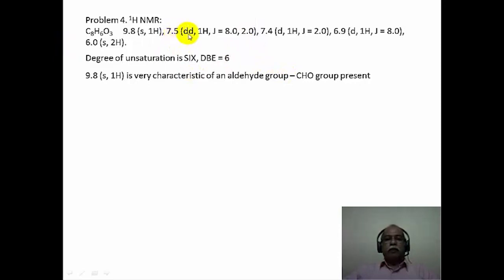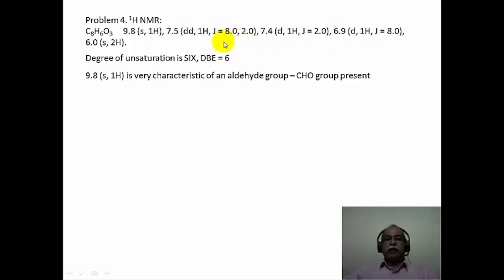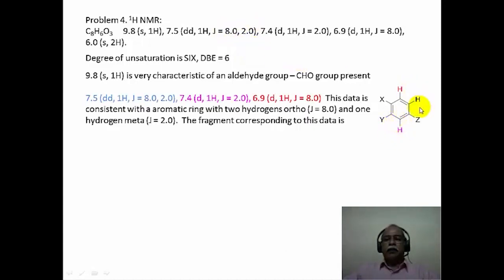If you look at 7.5 ppm doublet of a doublet with 8 and 2 Hz couplings, 7.4 ppm a doublet with J equal to 2 Hz, and 6.9 ppm a doublet with J equal to 8 Hz — all of them are 1 hydrogen intensity. This would only mean you have an aromatic skeleton with 3 hydrogens, indicating a trisubstituted aromatic compound. The coupling constants reveal the substitution pattern: 8 Hz is an ortho coupling, and 2 Hz is a meta coupling. So there are two ortho-adjacent hydrogens and one meta hydrogen.